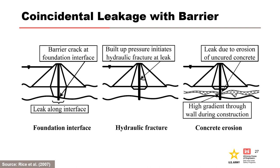The middle figure shows hydraulic fracture on the downstream side of a barrier due to elevated water pressures from flow through the defect in the barrier. Hydraulic fracture can also be caused by high water pressures on the upstream side of the barrier and leakage through the defect, stress redistribution in the core during barrier construction, or post-construction deformation. In the right figure, the barrier is constructed through a zone of high conductivity, and a large gradient is imposed on the uncured concrete, which erodes finer particles of the concrete mix before curing, resulting in a segregated concrete backfill.